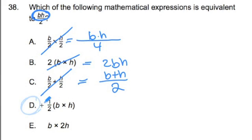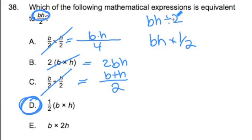We already said that d is the answer, because when you're doing bh divided by 2, that's the same as doing bh times one half. And that's what this one says here. The opposite of, I mean, dividing by 2 is the same as multiplying by its reciprocal one half.